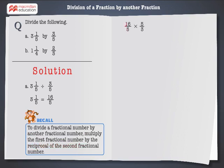Hence, 16 by 5 has to be multiplied by 5 by 3, which gives us 16 by 3. Hence, the answer is 16 by 3.